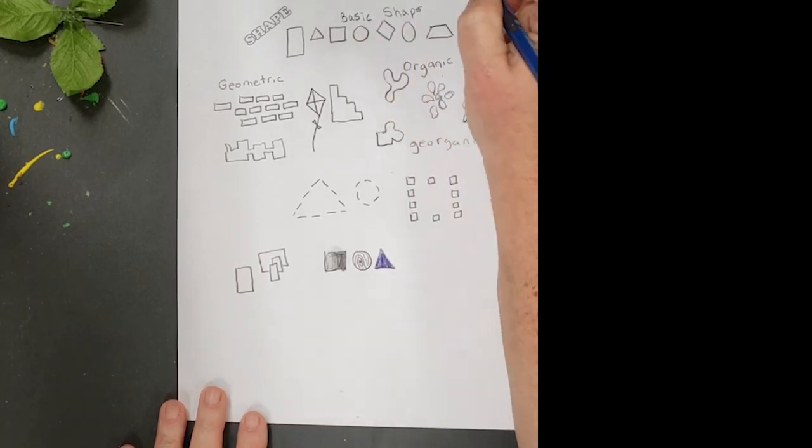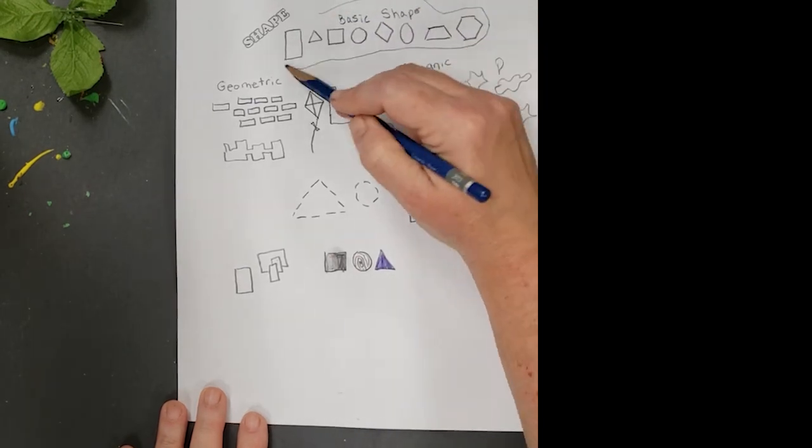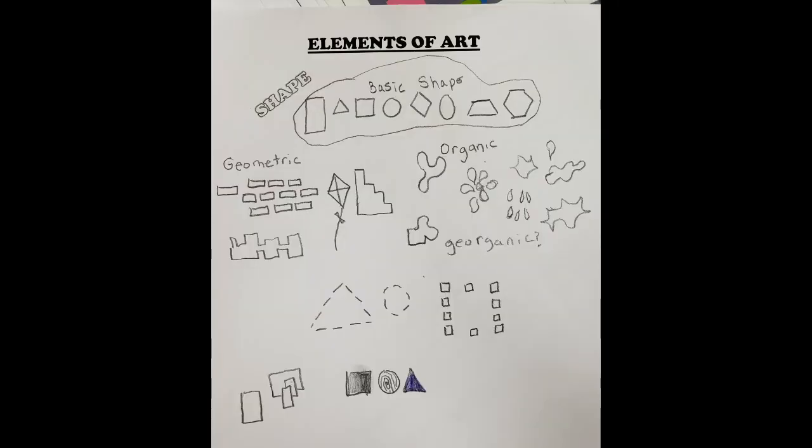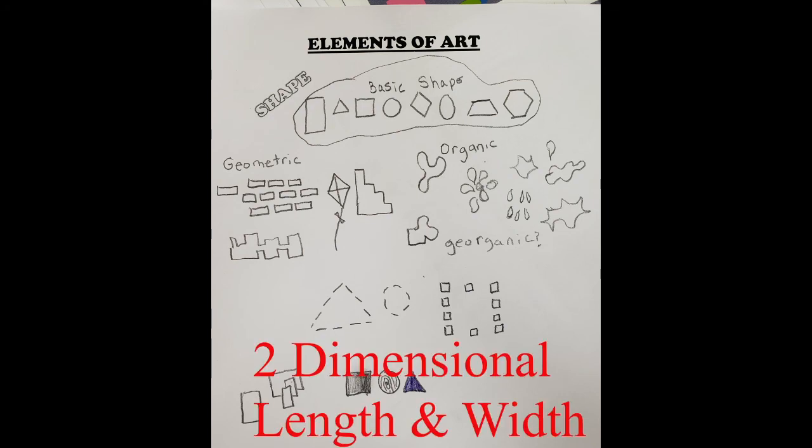The basic shapes, again, were those elementary shapes that are geometric, and then we also had organic shapes and implied. All of these types of shapes are two-dimensional, or 2D. That means they have length and width, but no depth.